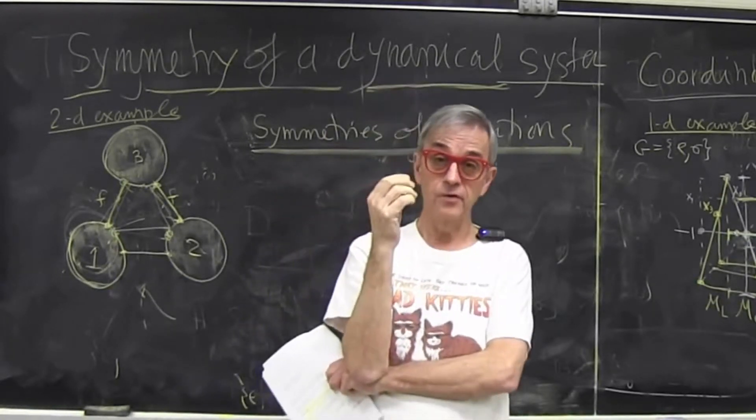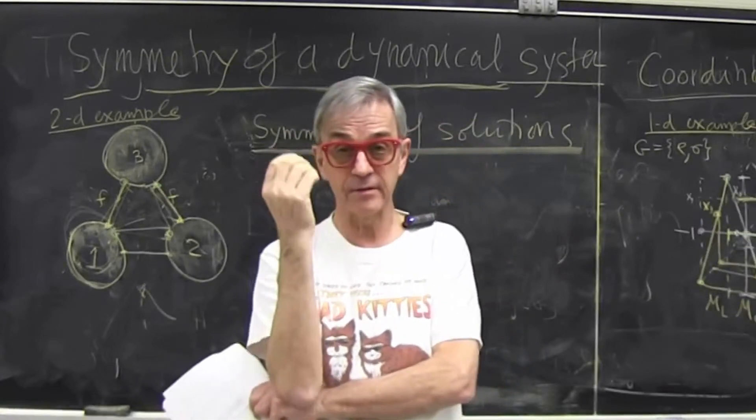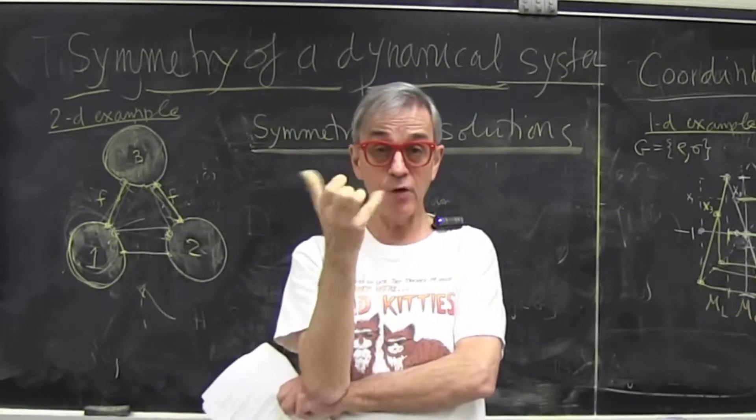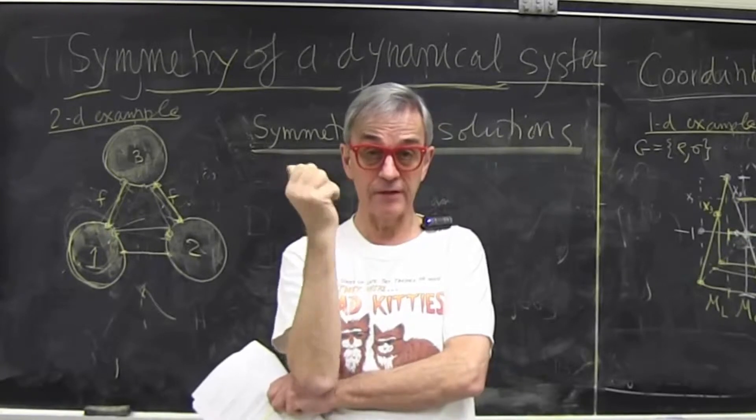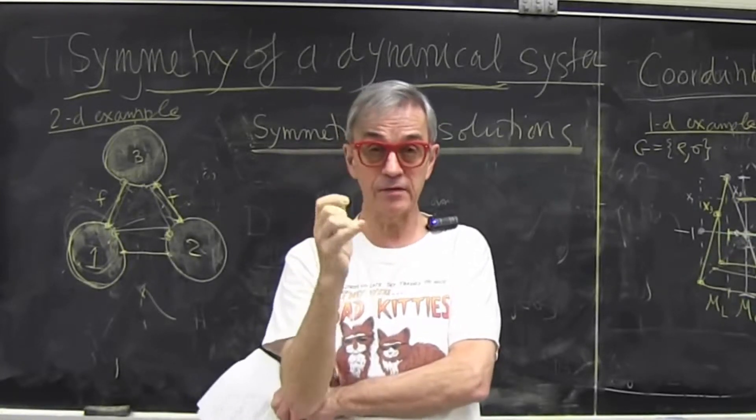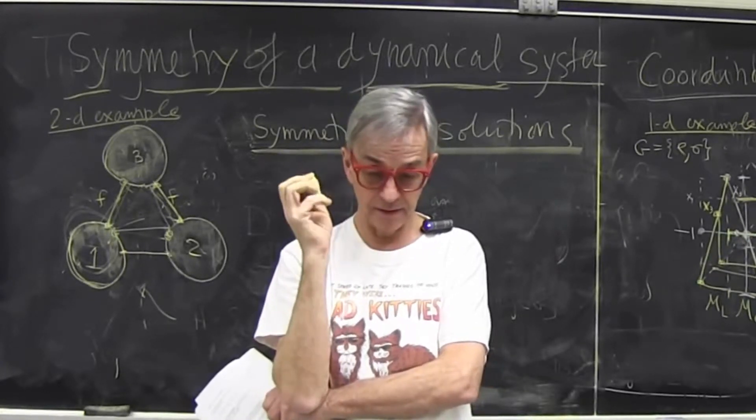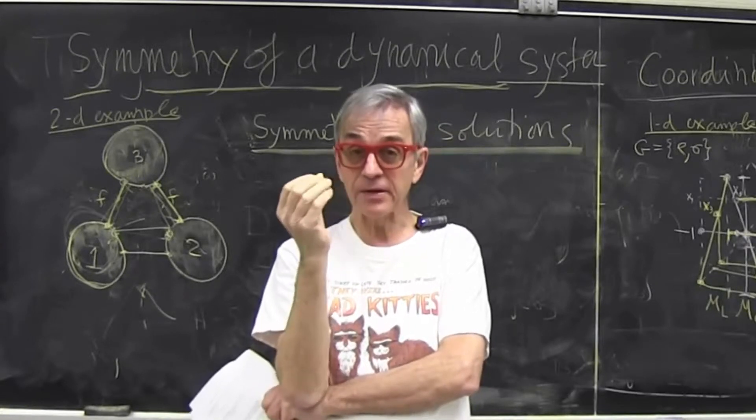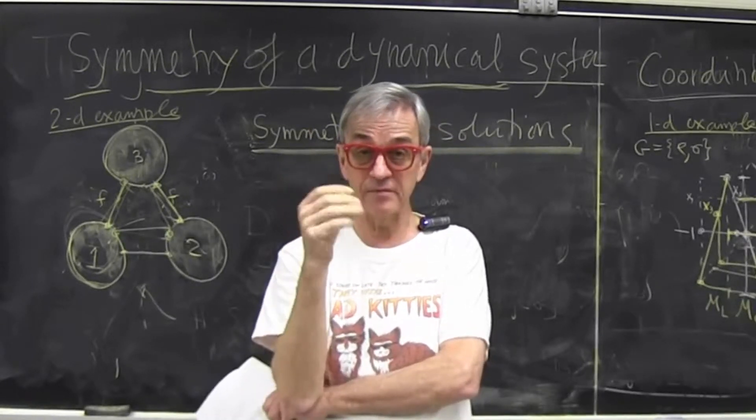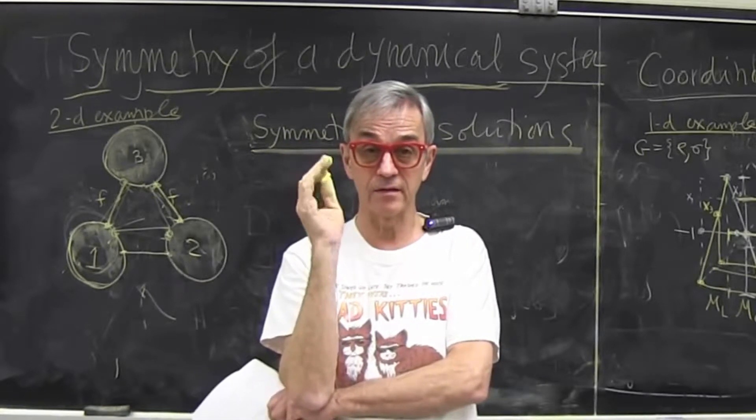So if I use Newton's laws for some system, the law for that system might be such that I have a symmetry. Could be rotational, could be some flip symmetry. But if I start someplace in a state space, phase space in that case, and evolve the system, the solution has no symmetry, generically.